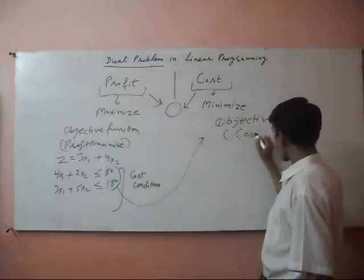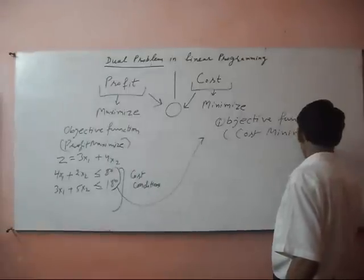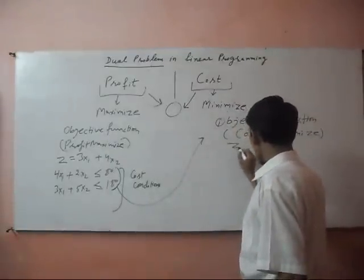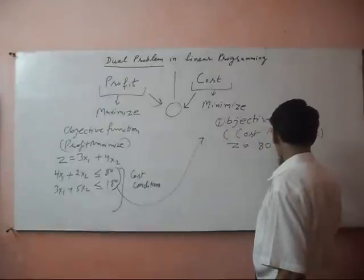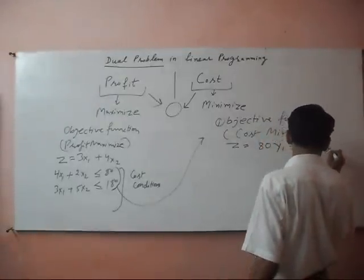Cost minimize, minimize. Z is equal to 80y1 plus 180y2.